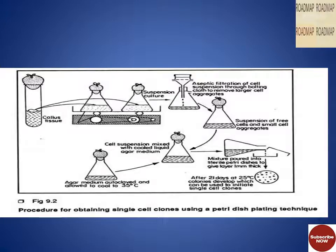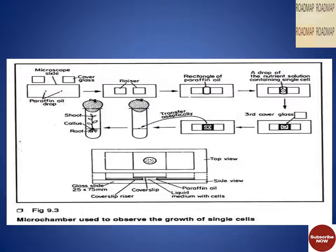This figure shows the procedure for obtaining single cell clones using a petri dish plating technique. Callus tissue is taken into suspension culture, then aseptic filtration of cell suspension through bolting cloth is done to remove larger cell aggregates. The suspension of free cells and small cell aggregates is mixed with cooled liquid agar medium and poured into sterile petri dishes to give a layer of 1 mm thick. After 21 days at 25 degrees centigrade, colonies develop which can be used to initiate single cell clones.